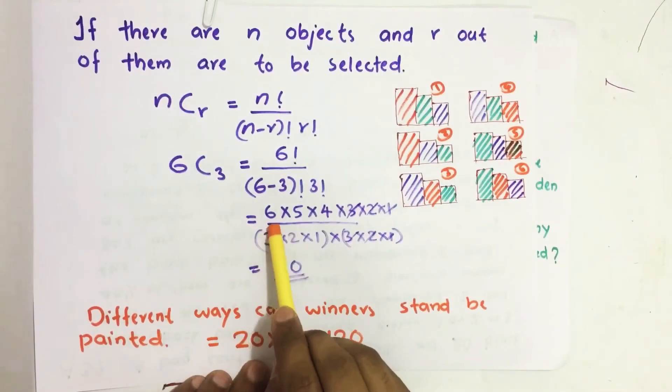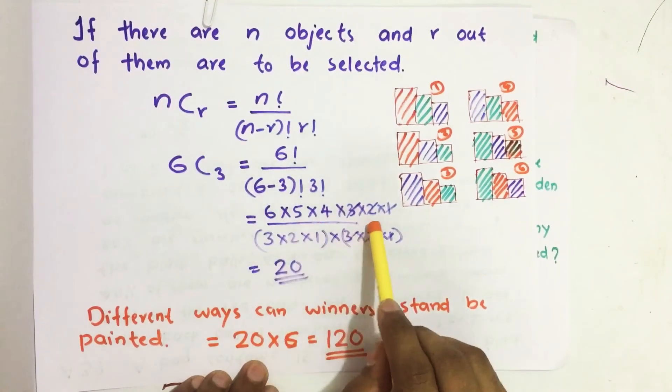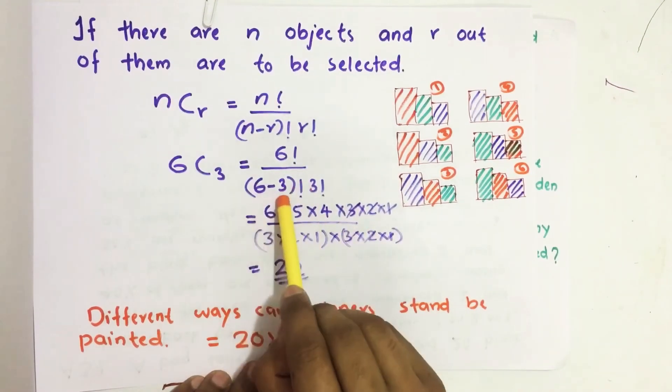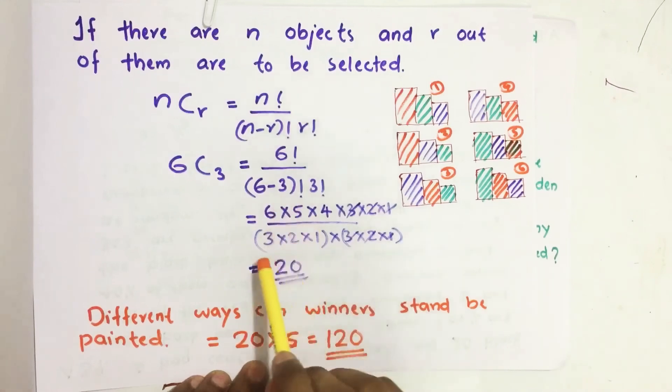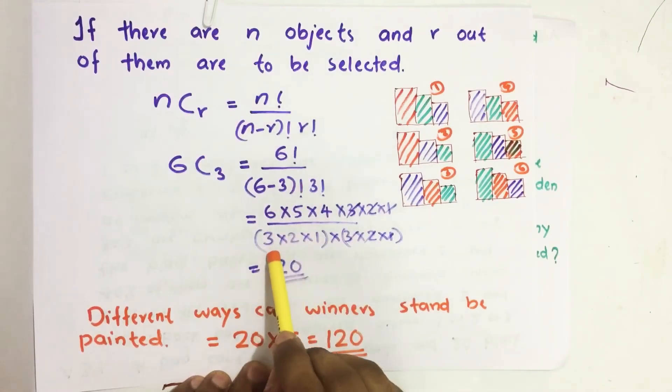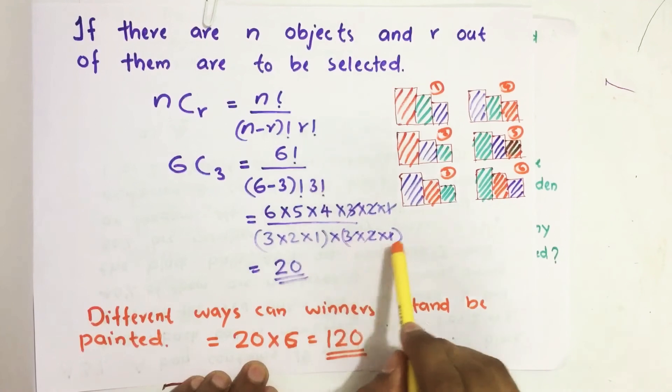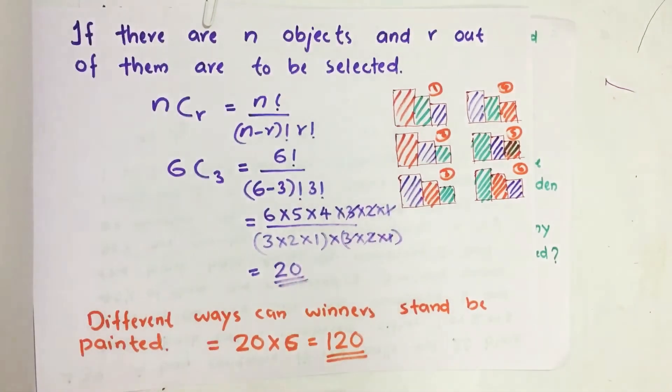6 factorial means 6 × 5 × 4 × 3 × 2 × 1. 6 minus 3 factorial means 3 factorial which comes 3 × 2 × 1 times 3 × 2 × 1. After simplification we get 20.